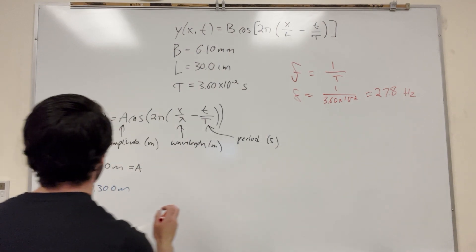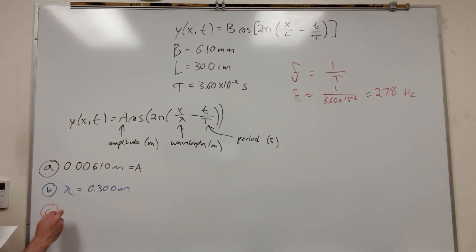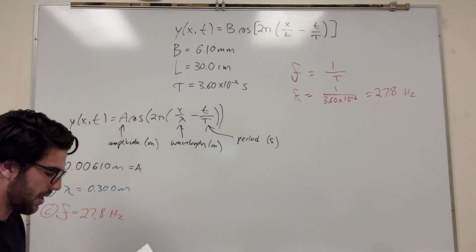so it's going to be 27.8. And then the unit is going to be one over seconds, which is the same as hertz. So we can say that C, or frequency, is equal to 27.8 hertz. That's what part C is asking for.